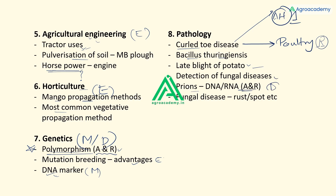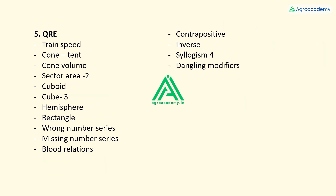From prions, an assertion-reason based question appeared — this was slightly difficult, requiring specific knowledge about whether prions have both DNA and RNA. If your concepts on prions, DNA, and RNA were clear you'd find it easy, otherwise difficult. A question on which of the following is a fungal disease was again very easy. Overall, most plant pathology questions were easy with only a few difficult ones.